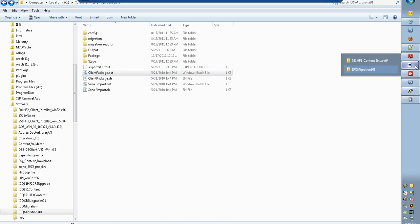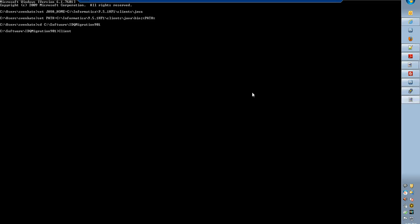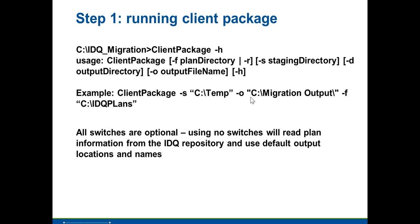First, we will run the client package. By default, you are not expected to provide any switches unless you want to change the output location or specifically package only a few plans from data quality 8.6.2. In 9.0.1, there are many caveats — for example, you need to redo the address validator component since 8.6.2 uses Melissa Data and QAS as an address engine.